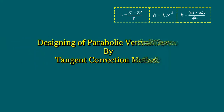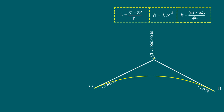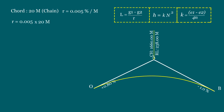Here we will see a sample of design calculations by using the tangent correction method. The known information: a parabolic vertical curve is to be set out connecting two uniform grades of plus 0.8% and minus 1%. The chainage and reduced level of the point of intersection are 1,660 meters and 238.00 meters. It is decided to fix the pegs at uniform chord intervals of 20 meters chainage. The rate of change of grade is 0.005%, meaning the rate of change of grade for a 20-meter chain is 0.005 × 20 = 0.1% per chain.